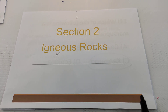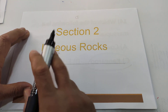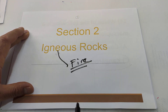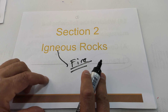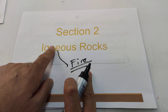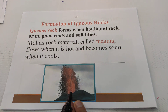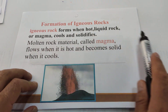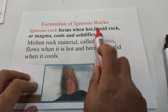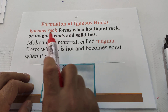Section two: igneous rocks. The word igneous means fire — don't forget, this comes from Greek language where fire is the meaning for igneous. Igneous rock forms when hot liquid rock, or magma, cools and solidifies.